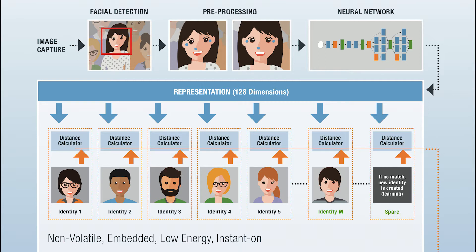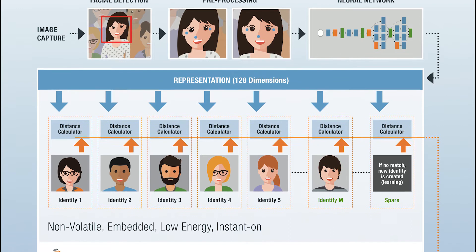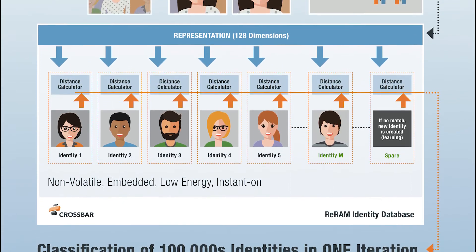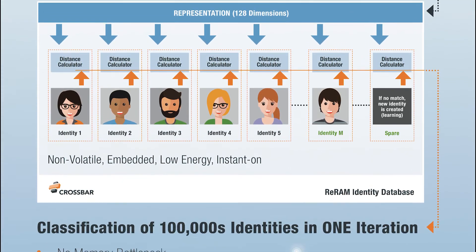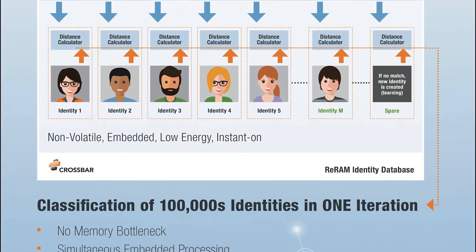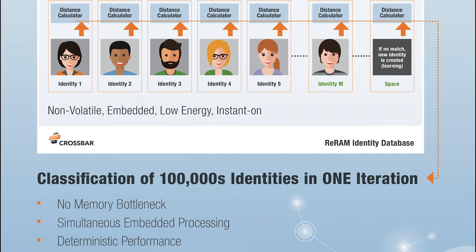So it's very fast and low energy because it's non-volatile — you don't need the neural network to be active continuously, like in a surveillance camera, mobile phone, or wearables. Because the data stays in the technology, you don't have to power up and refresh the data. It's non-volatile memory.